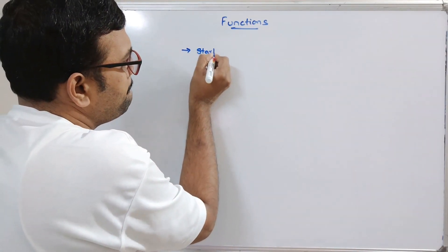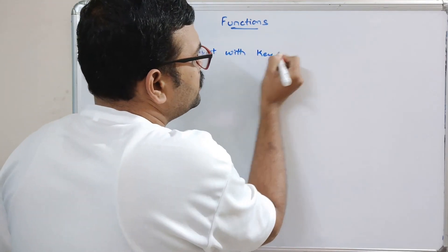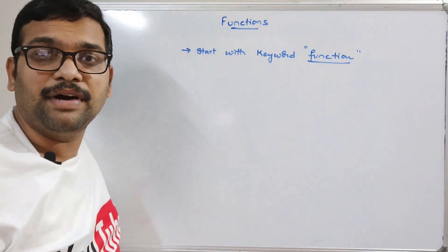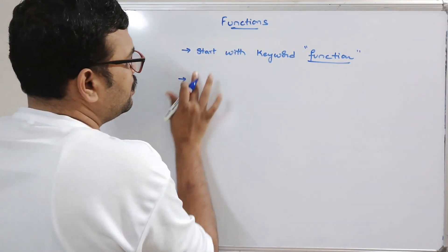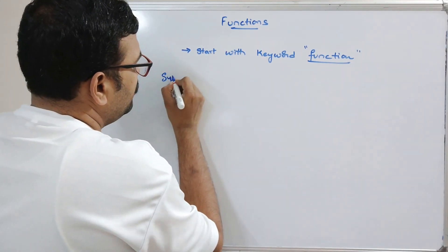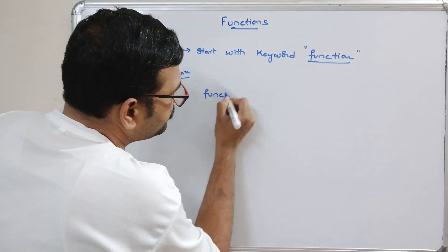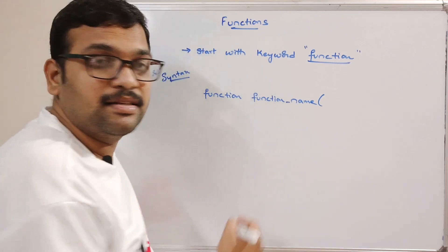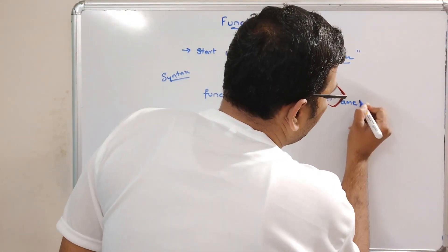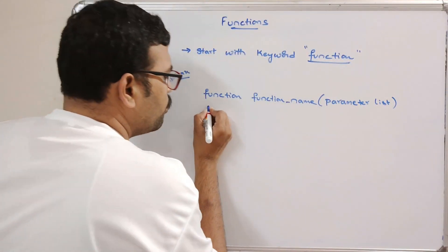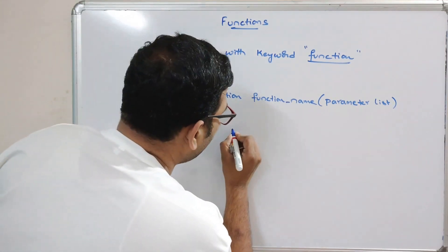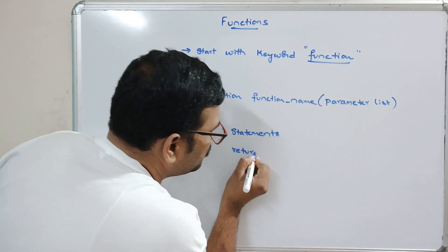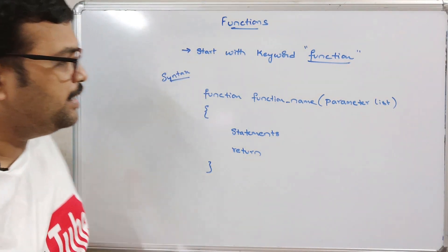User-defined functions should start with a keyword called 'function'. The syntax is: the keyword 'function', followed by the function name, followed by parentheses, followed by the parameter list, then curly braces containing a block of statements, and then the return statement.